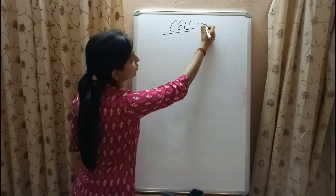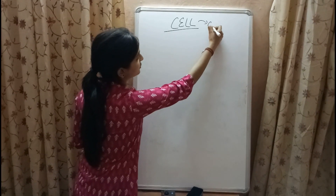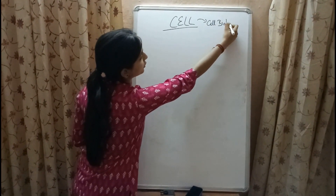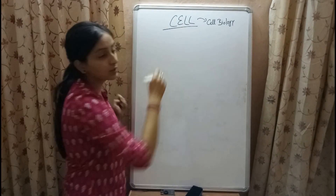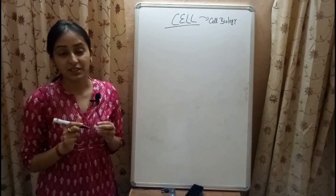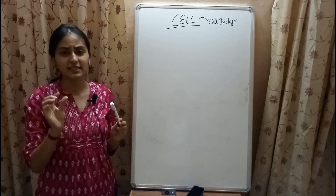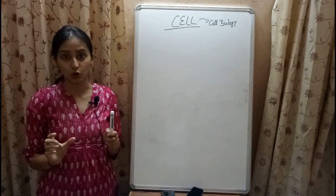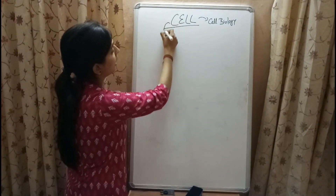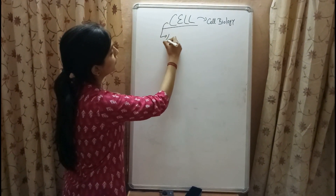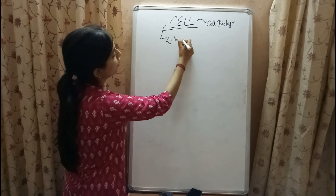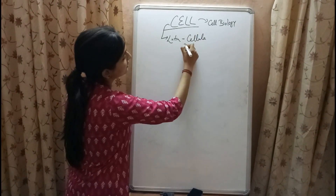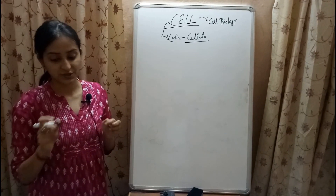The study of cells is known as cell biology. Cells were first discovered by a scientist called Robert Hooke in a thin slice of cork, and he observed them as honeycomb and gave them the Latin word cellula, which means little rooms.